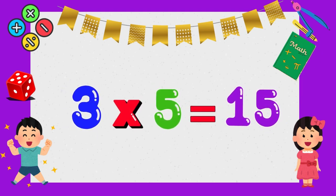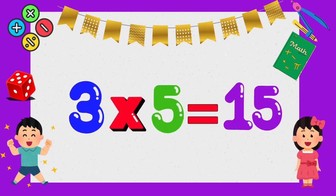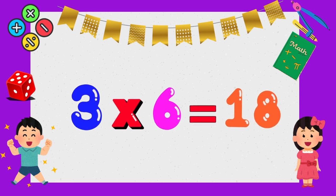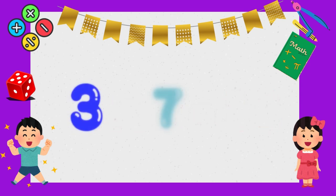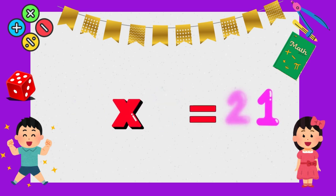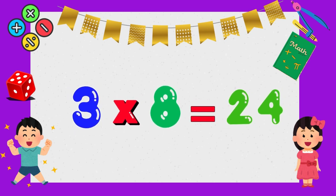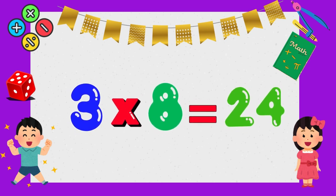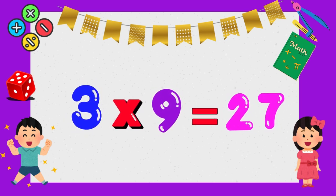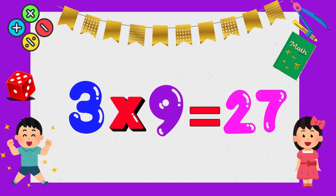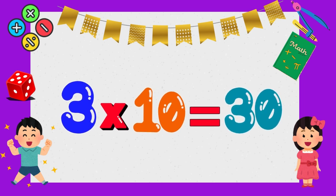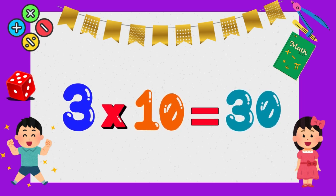Three times five is fifteen. Three times six is eighteen. Three times seven is twenty-one. 3 times 8 is 24. 3 times 9 is 27. 3 times 10 is 30.